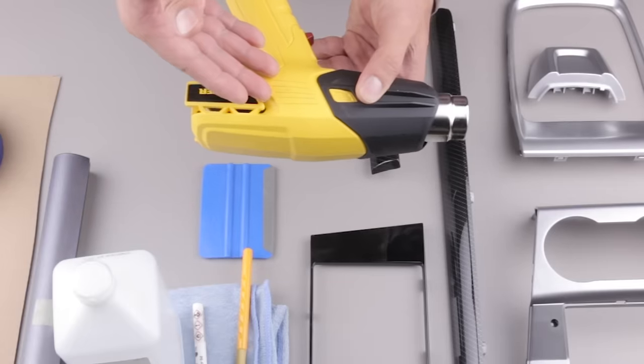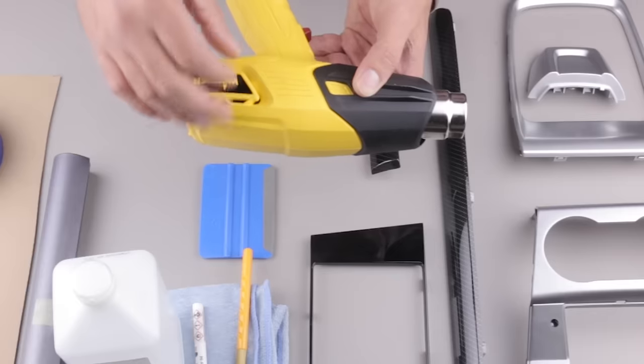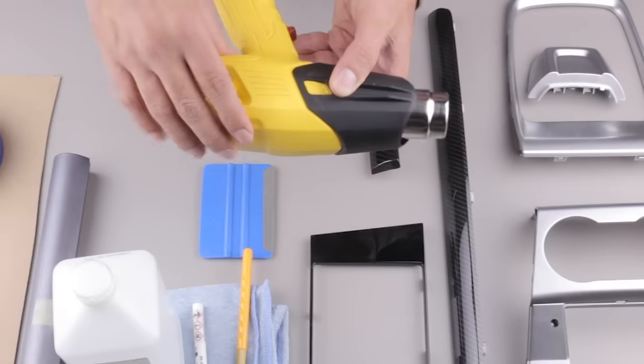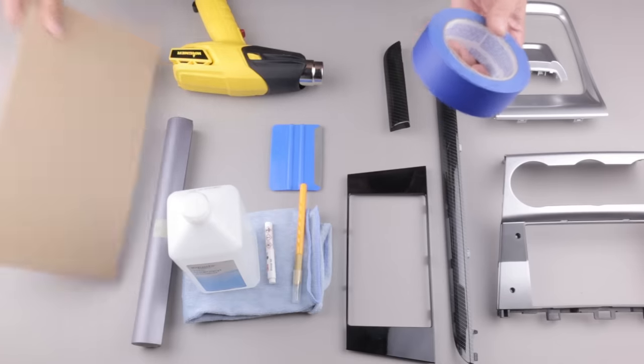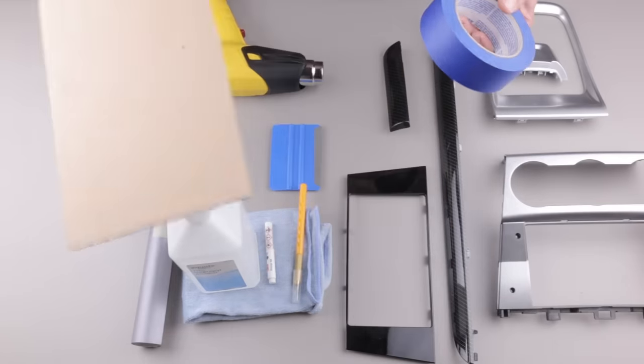A heat gun. You can do it with a blow dryer but a heat gun is much more effective for the job and it has a lot of other uses so it's good to have laying around. And to make the job easier if you have some painters tape laying around and a piece of cardboard so you don't damage the surface you're working on.